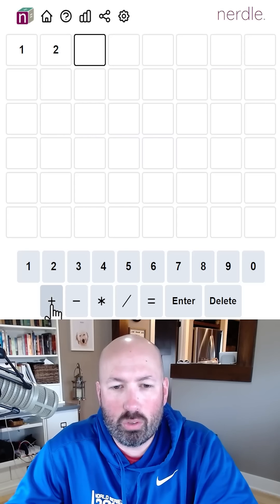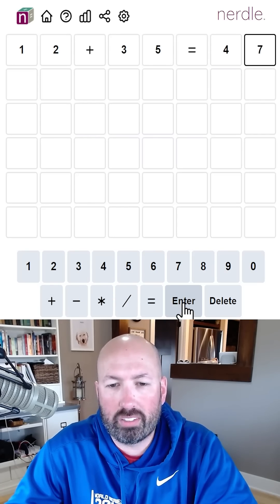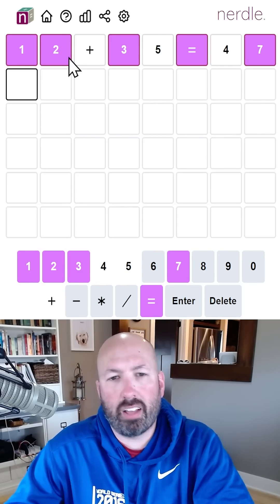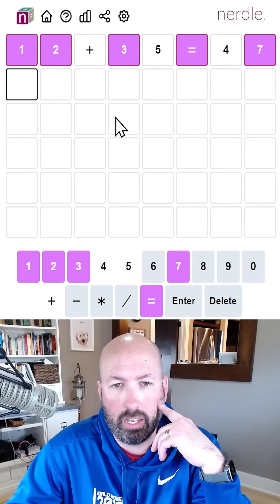I'm going to start with my usual 12 plus 35 equals 47. So we got a lot of the digits, but in the wrong places. It is a two-digit total at the end.